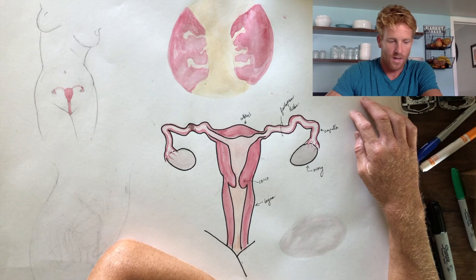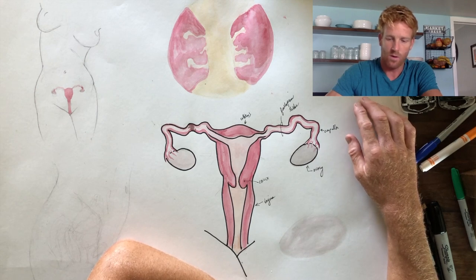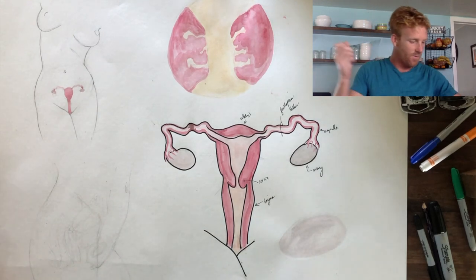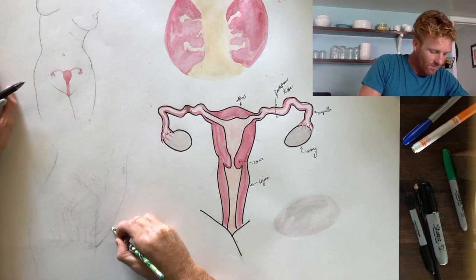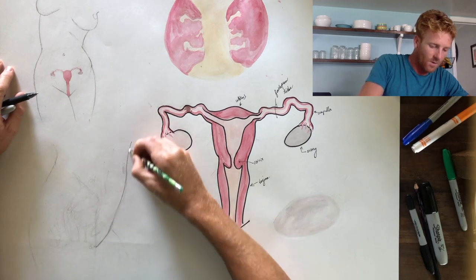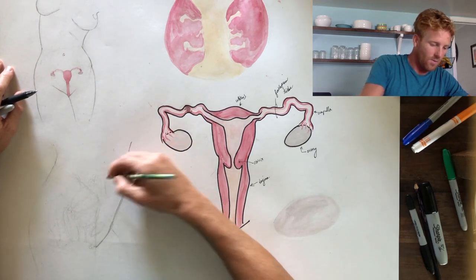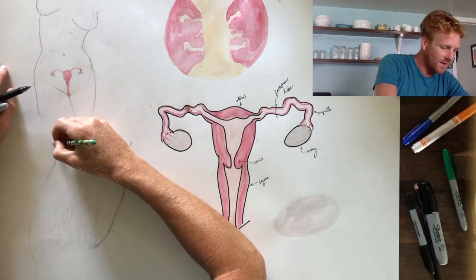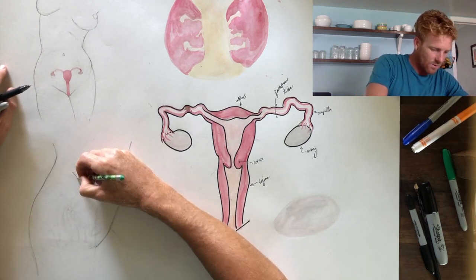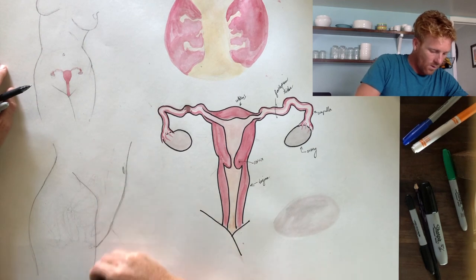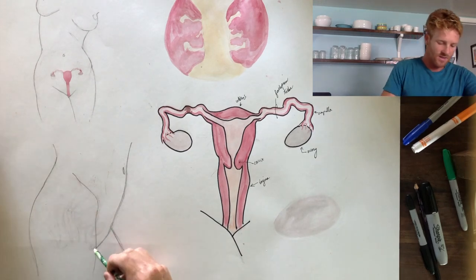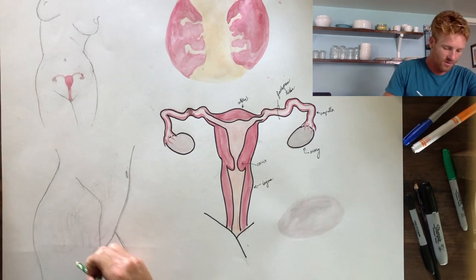Now we're going to zoom in and look at a lateral view of where all of these organs exist in the female body. Here is a lateral illustration of the female lower torso and pelvic region. The female external genitalia starts right about here and extends posteriorly. The first part from this view is the clitoris — that is an analog to the male penis. It's a collection of erectile tissue which becomes engorged during sex.